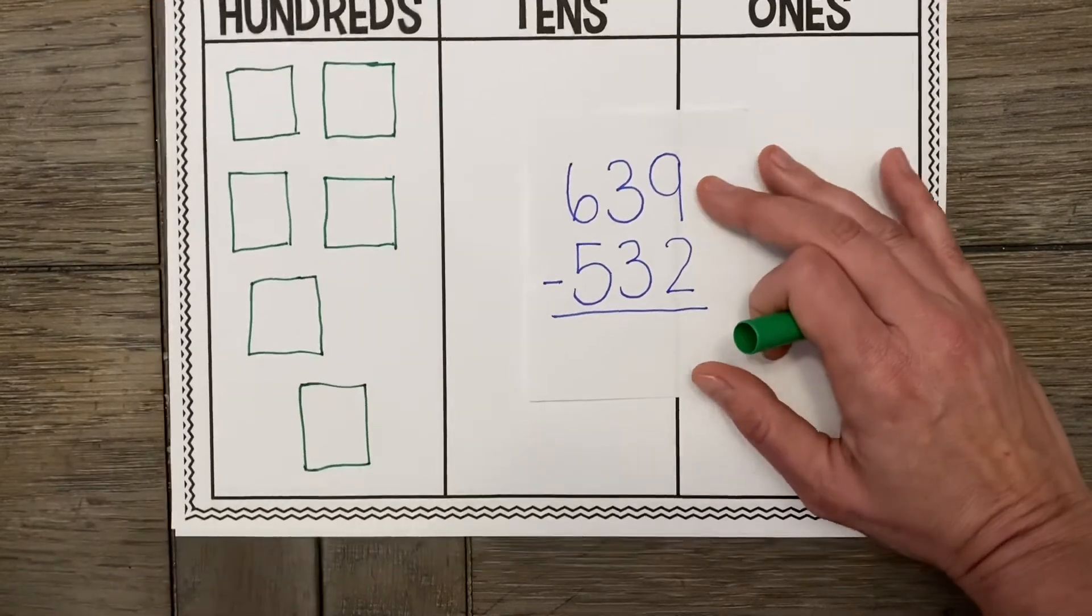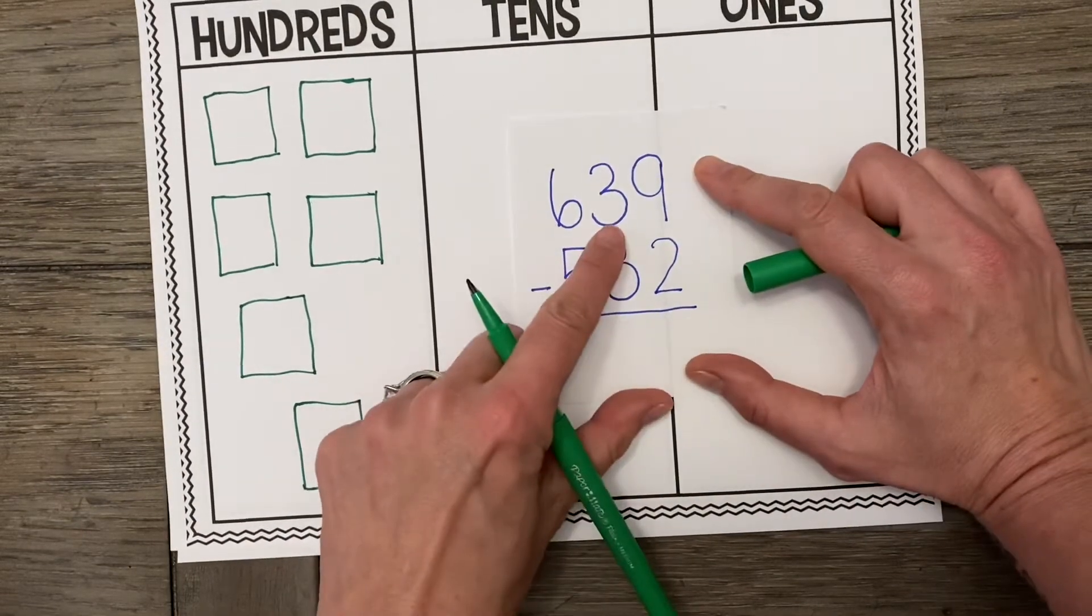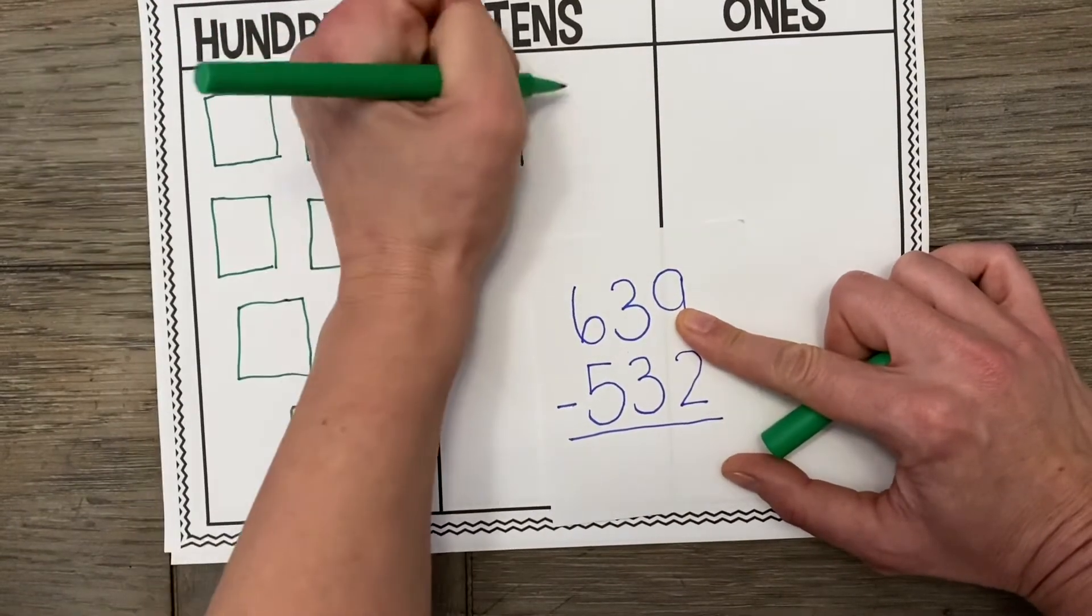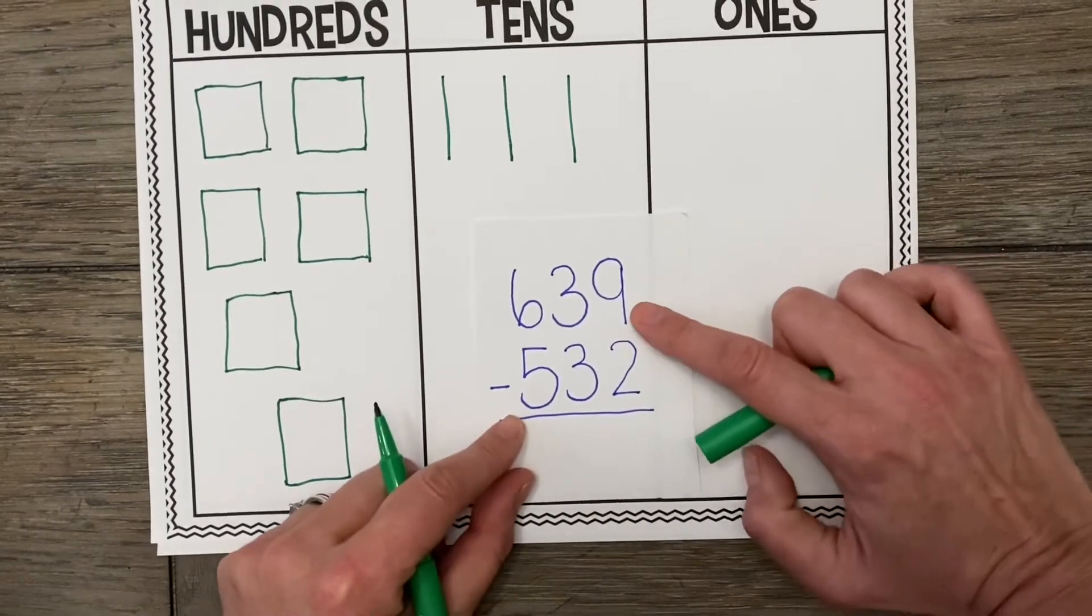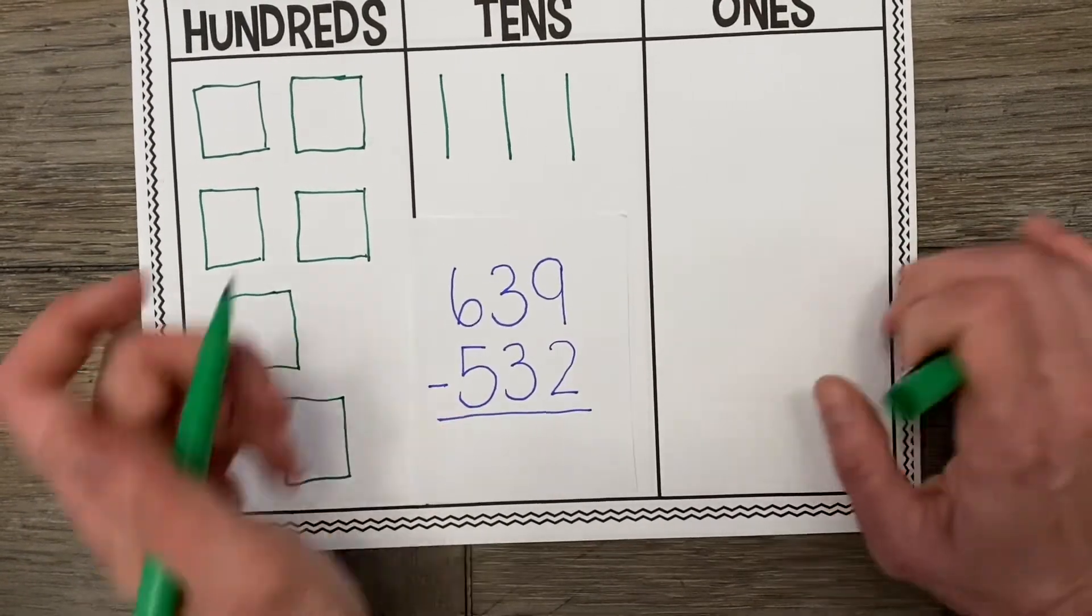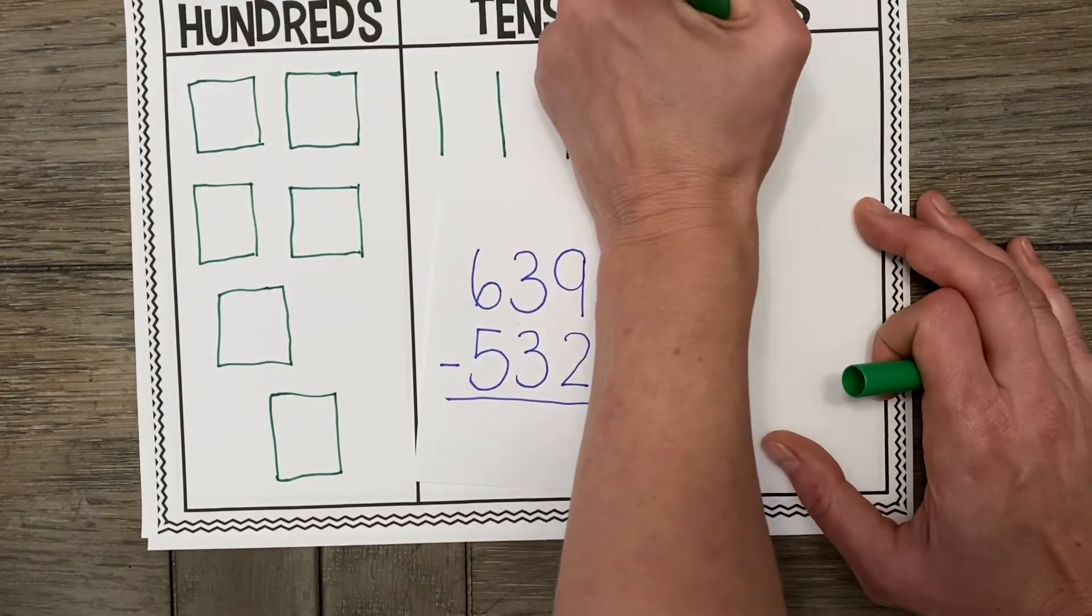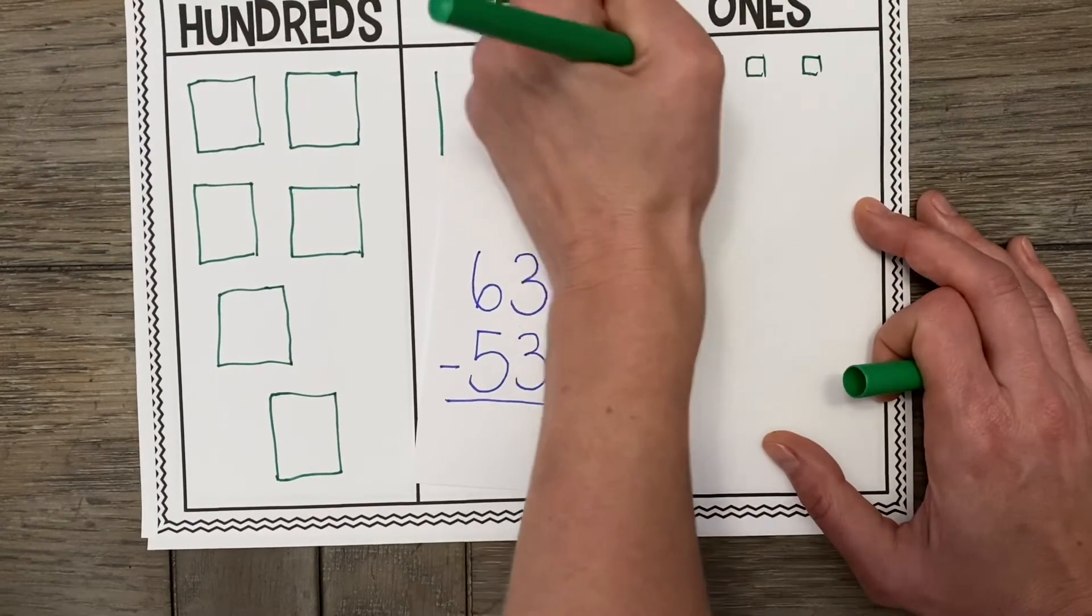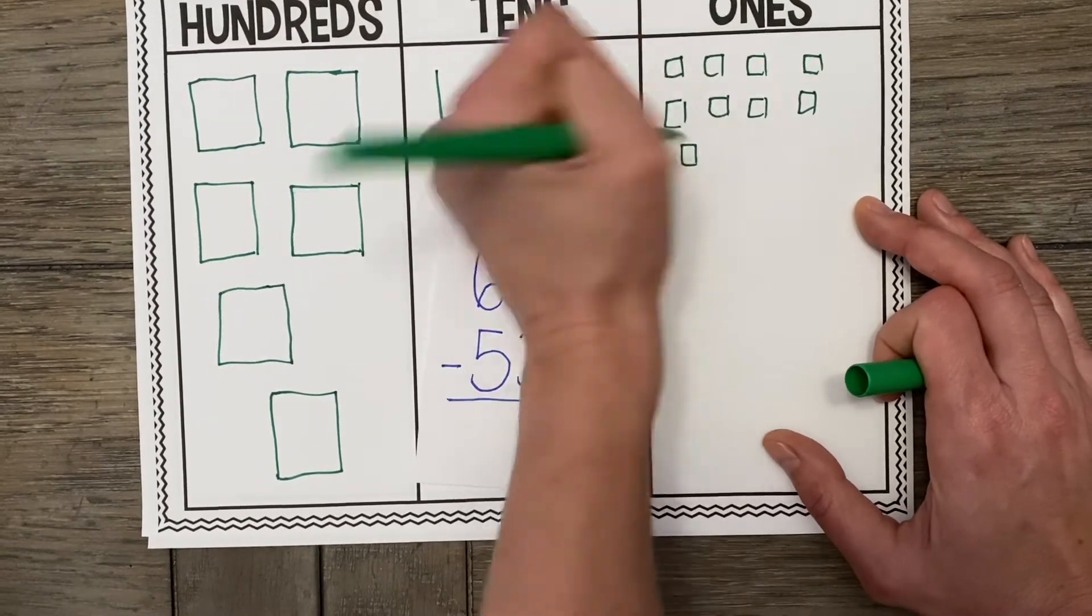There we go. Okay, so there are our 6 hundred squares. Now let's draw our 3 tens. So I'm going to draw 1, 2, 3 tens. Alright, and then we have 9 little 1 cubes. Remember, keep these small so we can tell the difference between these and our 100s.